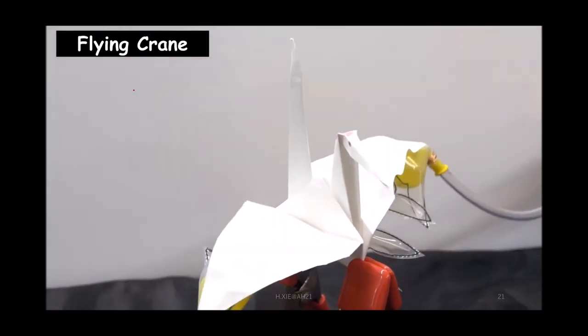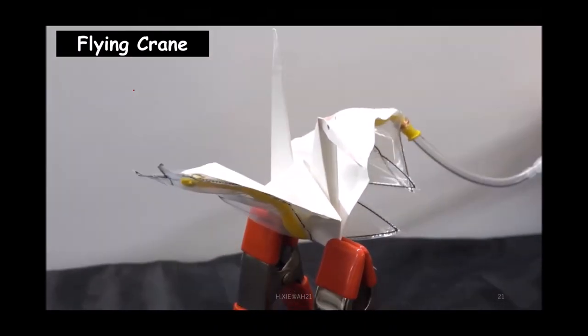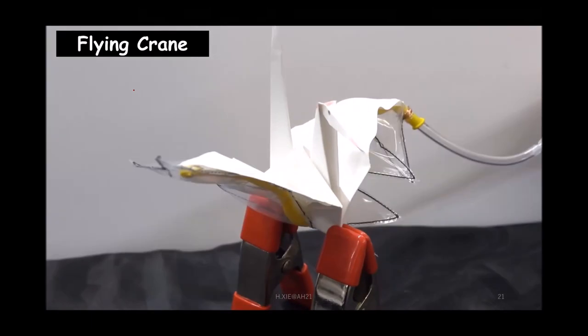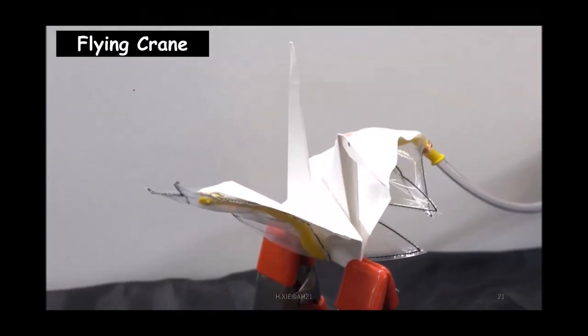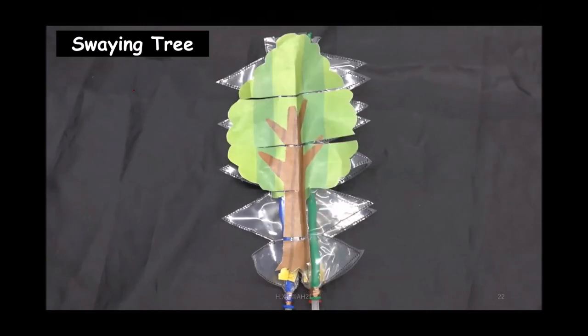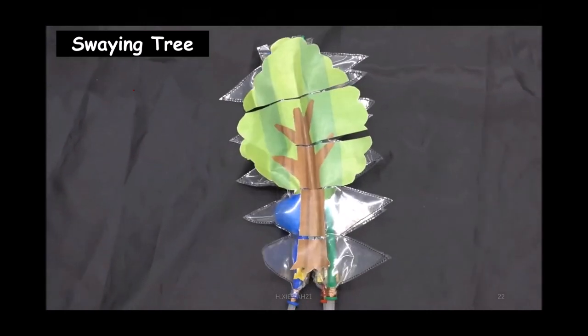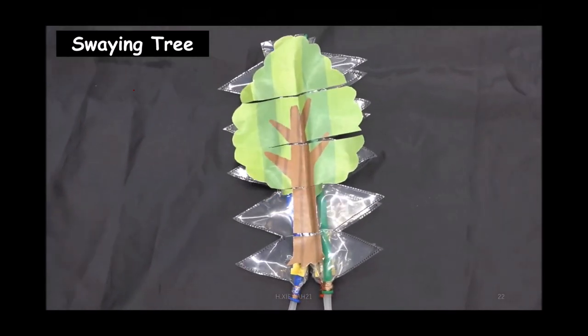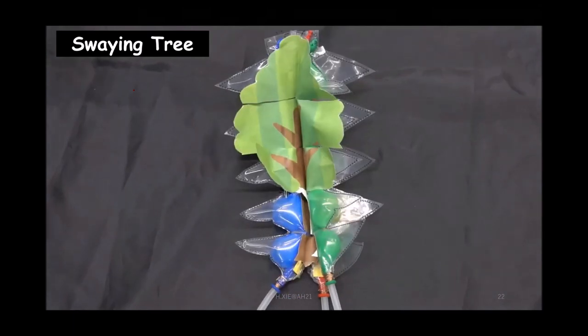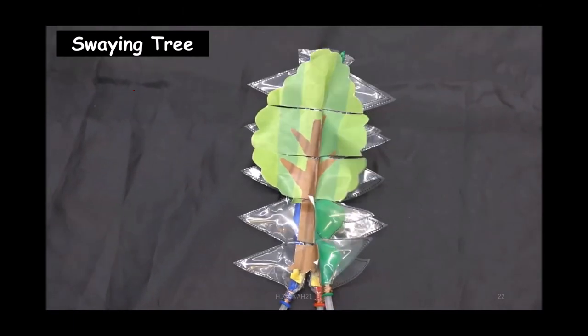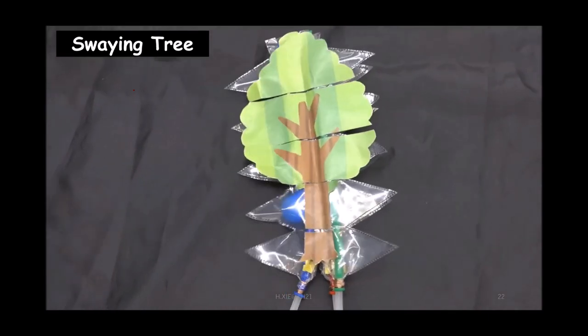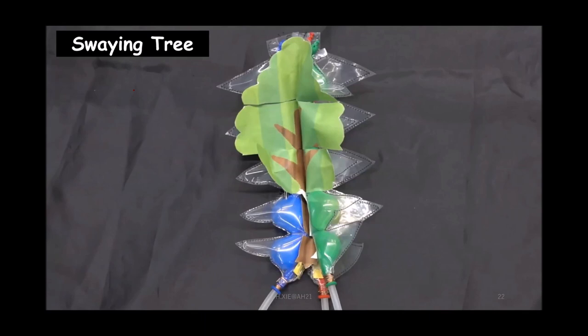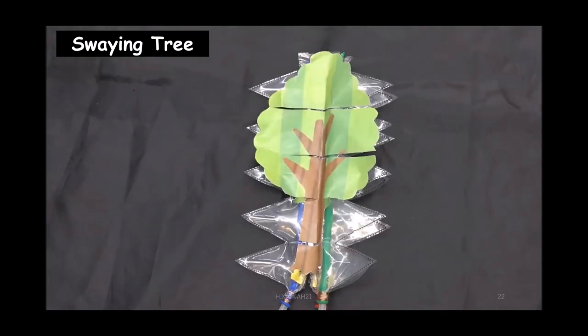Also for the origami crane, we just use one actuator that can fly something like that. Finally, the most complex one, we use three actuators here. We want to simulate a tree under the wind. So when wind comes, it's well swinging. We can use it for some more three-dimensional movement.